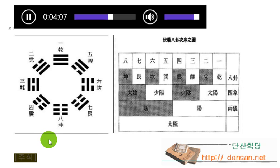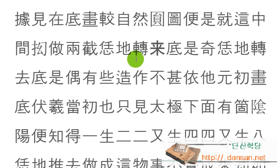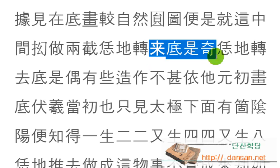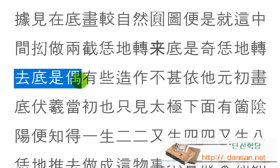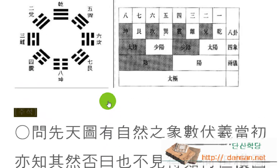그러면서 뭐라고 하냐면, 임지전내저시기—올레자하고 기자를 동그라미를 쳐보세요. 이렇게 임지는 그렇게 굴러서 오는 것을 기수라고 했고, 임지전거저시우니, 저렇게 굴러서 가는 것을 우수라고 했다 이거지요. 그러니 유사 조작이요. 사자는 조금이라는 뜻이에요. 약간 조금 조작함이 있고, 불심의 타 원초 획전이라—심히 그가 원래부터 획을 그은 것에 의지할 수는 없더라. 다시 말하면, 원도와 방도를 가지고 볼 때 방도가 더 자연스러운 모습이라는 얘기지요. 핵심은 그거에요.